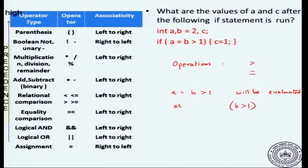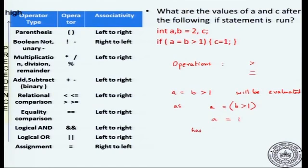The expression a equal to b greater than 1 will be evaluated as b greater than 1 first because that has higher precedence. So that goes first and then a equal to (b greater than 1). Now b is 2, so b greater than 1 is 1. So you have a equal to 1, and that assignment expression assigns the value 1 to a and the return value is 1.